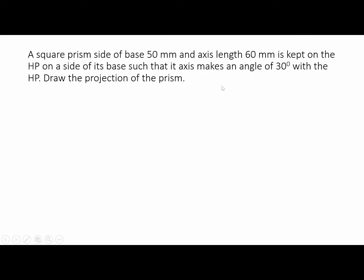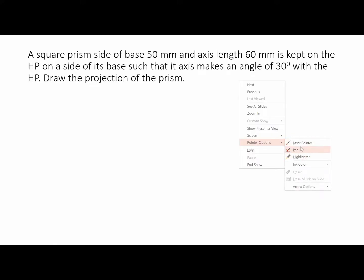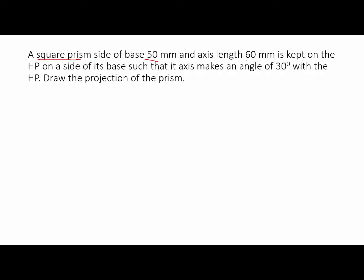A square prism, side of base 50mm and axis length 60mm. So very important information is given. While reading the question you can mark very important notations: the base is 50mm, it is a square prism, and axis length is equal to 60mm. It is kept on the HP on the side of its base such that its axis makes an angle of 30 degrees with the HP. That is very important information.